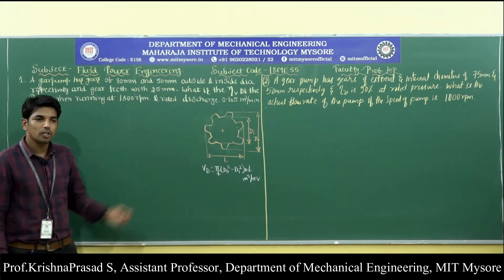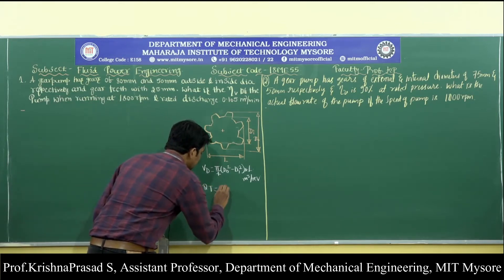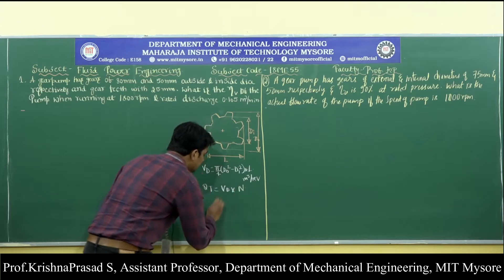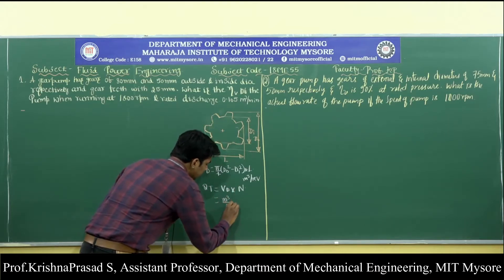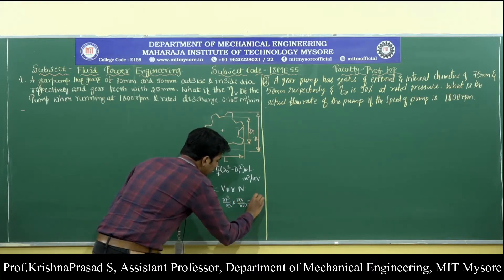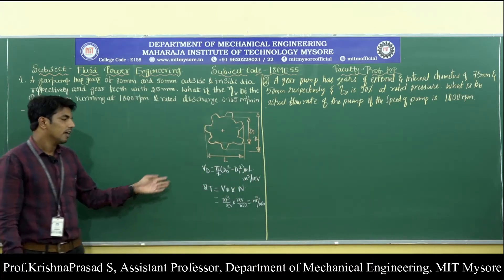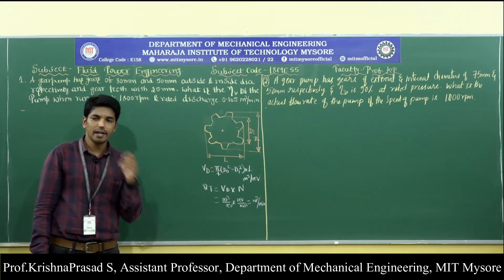The theoretical flow rate is nothing but volumetric displacement multiplied by the speed in RPM — that is, meter cube per revolution times revolution per minute — giving theoretical flow rate in meter cube per minute. This is the formula for calculating volumetric displacement as well as theoretical flow rate.